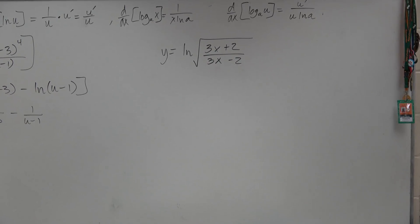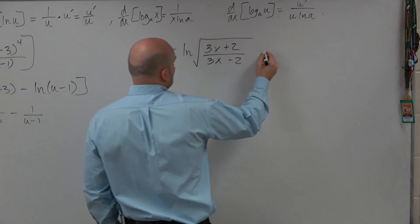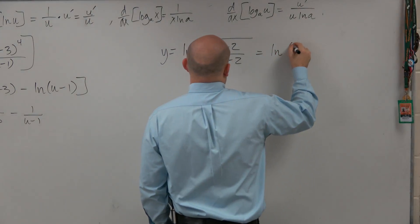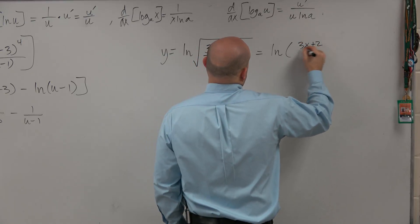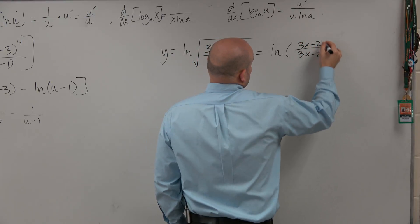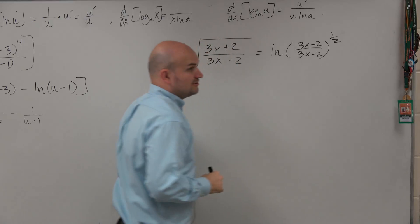A lot of times people make mistakes with their parentheses, so just remember we can rewrite this as ln of 3x plus 2 over 3x minus 2 raised to the one-half power.